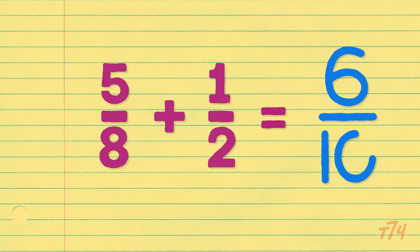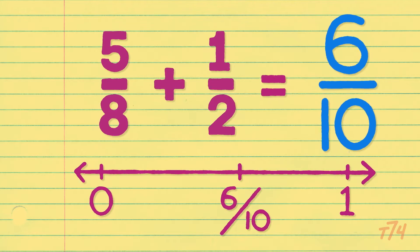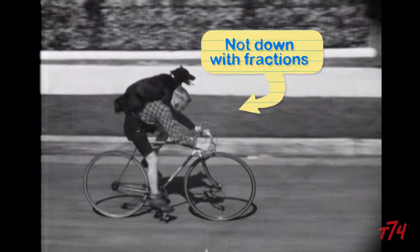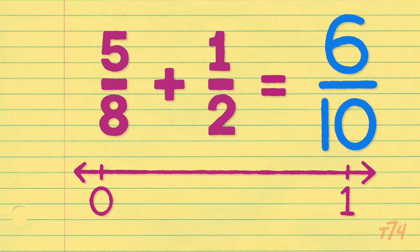Craig said 5/8 plus 1/2 equals 6/10 and plotted 6/10 on the number line. Now, Craig is obviously not down with his fractions and is adding them all wrong. It's a flawed reasoning example.